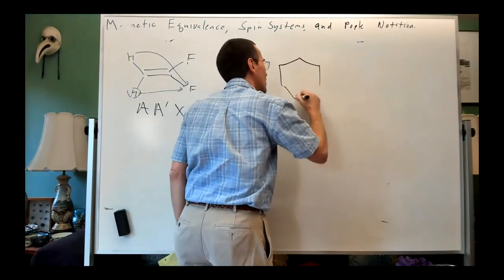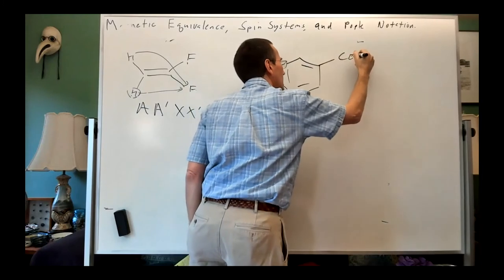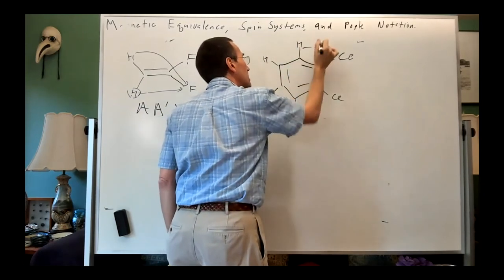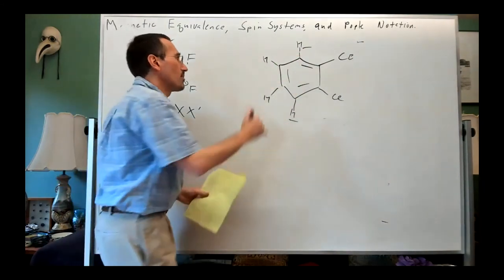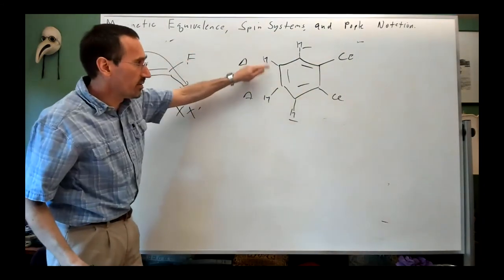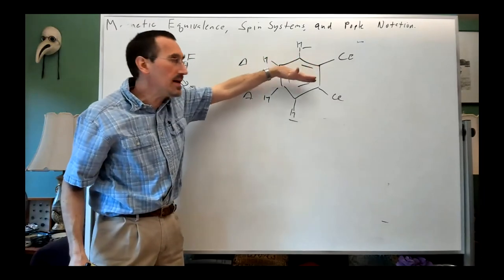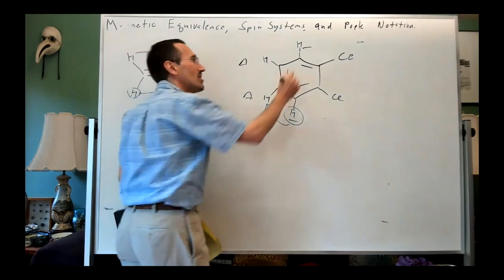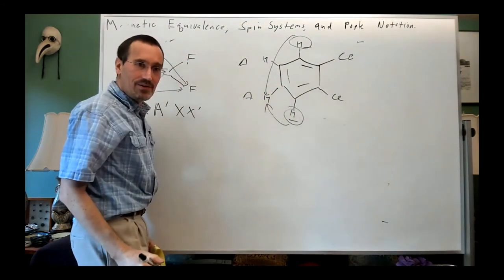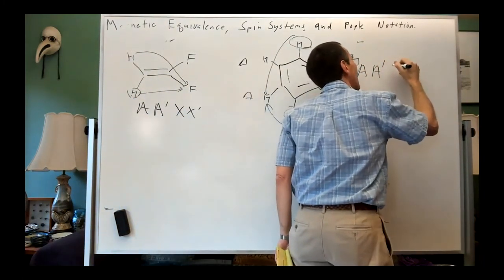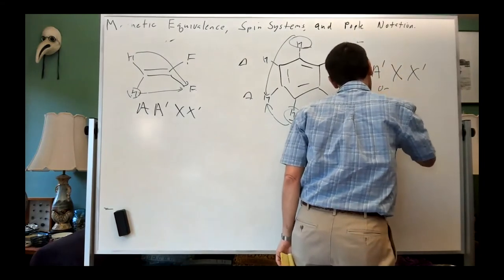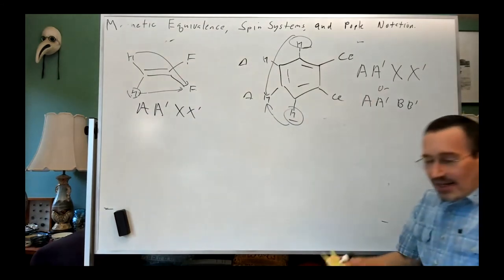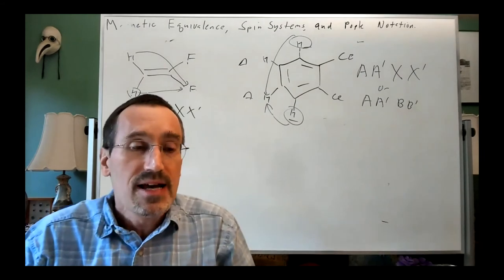The same situation arises in an ortho-disubstituted aromatic. I'll take phthalate — these two hydrogens here are clearly interchangeable by a symmetry operation, and these two hydrogens are clearly interchangeable. There's a plane in the molecule. And yet, with the same test: this hydrogen says it's ortho to one partner; this hydrogen says it's meta. So this is an AA'XX' system, or if they're close in chemical shift, AA'BB'. All those rules you thought you knew from sophomore organic chemistry can go out the window.